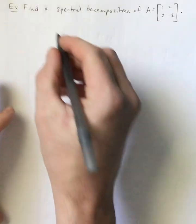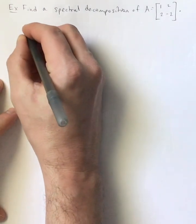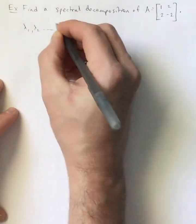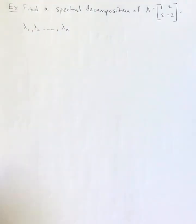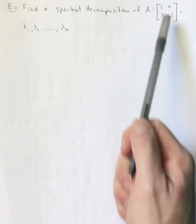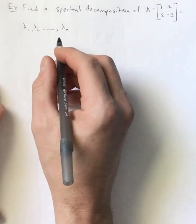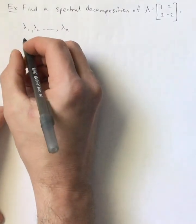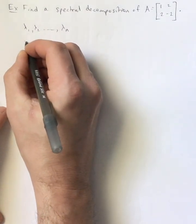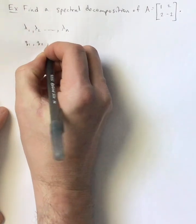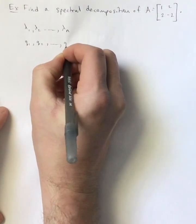But also the matrices that it will be written as a linear combination of, those are going to serve as projections of matrices or of vectors that we multiply those by in particular directions. So in general, let's say that we find lambda 1, lambda 2, up to lambda n for matrix A.